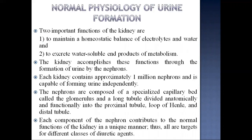We will first discuss the normal physiology of urine formation. Two important functions of the kidney are: first, to maintain a homeostatic balance of electrolytes and water; and second, to excrete water-soluble end products of metabolism. Each kidney contains approximately one million nephrons, composed of a specialized capillary bed called the glomerulus, and a long tubule divided into the proximal tubule, loop of Henle, and distal tubule.